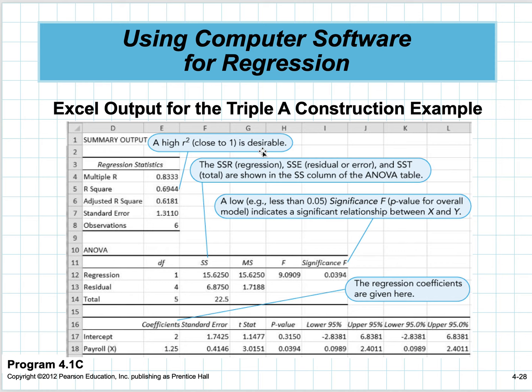A high R-squared close to 1 is desirable. Social scientists looking at, say, the relationship between parents being alcoholic and a child being alcoholic are happy to have 12–15% R-squared. Here's the ANOVA table: first is regression, then residual—which is also error—and total. They create an F-test from that, then the significance of the F-test. We're going to use 0.05—anything less than 0.05 is significant.